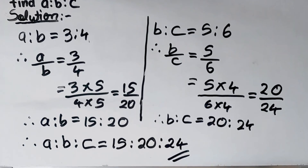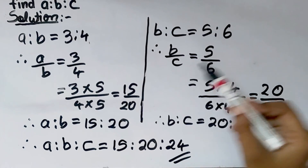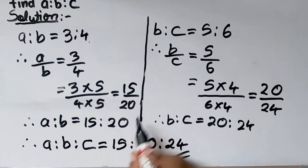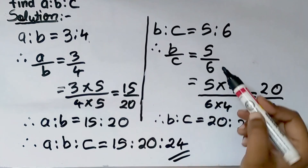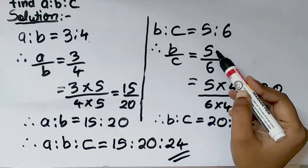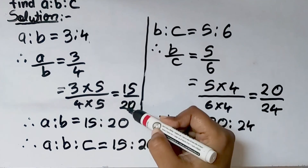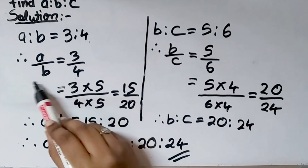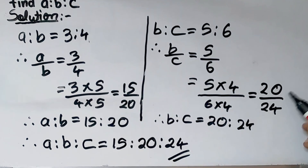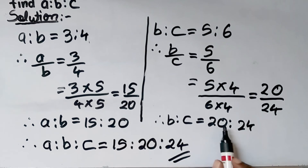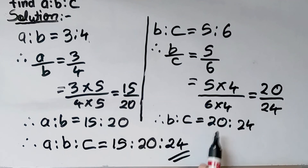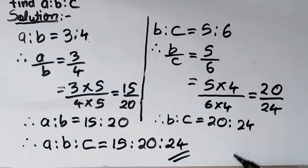To make the value of B the same in both ratios, we multiplied the first ratio by 5 (the value of B in the second ratio) and multiplied the second ratio by 4 (the value of B in the first ratio). Finally the B term in both ratios became the same, so we combined both ratios into a ratio of 3 numbers. This is how we solve such problems when we have to find a ratio of 3 numbers.